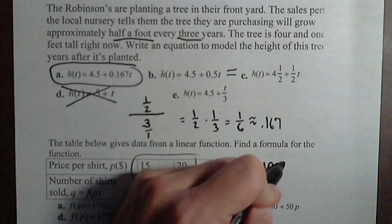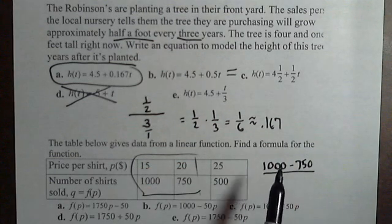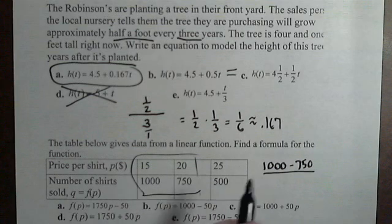So 1,000 minus 750, it doesn't matter what order you do. You're changing output over changing input, just gotta be consistent. So if I do 1,000 first,